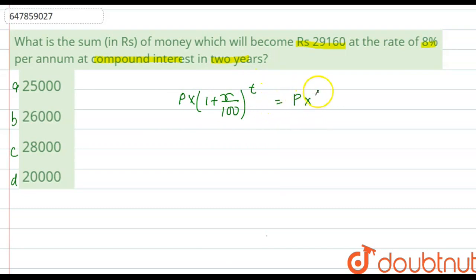P is what you don't know. You need to find P. So you must put the values in the formula. This will be to the power of 2. When we do the calculation, then you can write it as 108 by 100 to the power of 2. Okay?